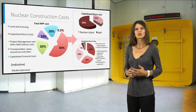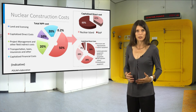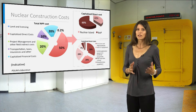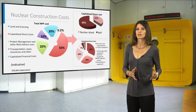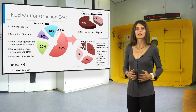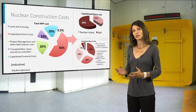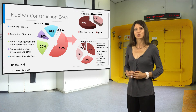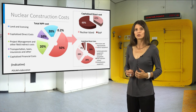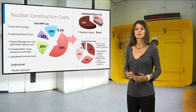Total direct costs may also be divided into nuclear island costs and balance of plant, which includes all the residual systems and equipment.